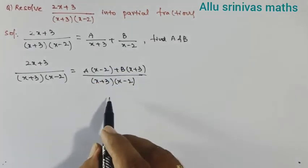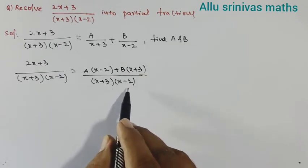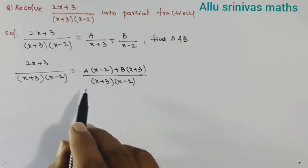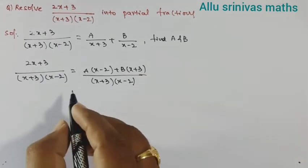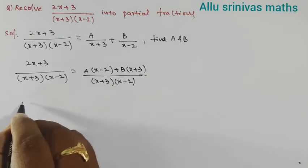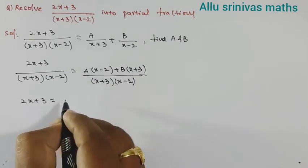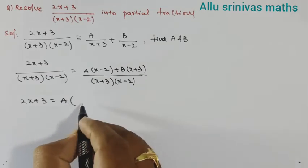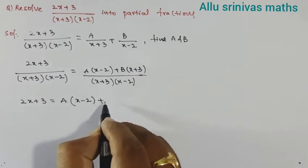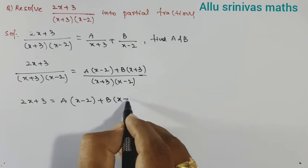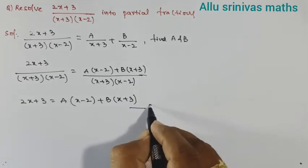Just observe this: the two denominators are the same, so the numerators are also the same. Therefore 2x + 3 = A(x − 2) + B(x + 3). Let us call this equation 1.